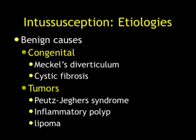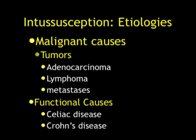In terms of intussusceptions in general, we think about benign and malignant causes. Benign causes can be congenital, Meckel's diverticulum, or cystic fibrosis. You can have inflammatory etiologies, or tumor-related causes such as Peutz-Jeghers, inflammatory polyps, and lipoma. For malignant causes, we're thinking adenocarcinoma, lymphoma, and metastasis. Another category is functional causes — there's an increased incidence of particularly intermittent intussusceptions in patients with celiac disease or Crohn's disease.